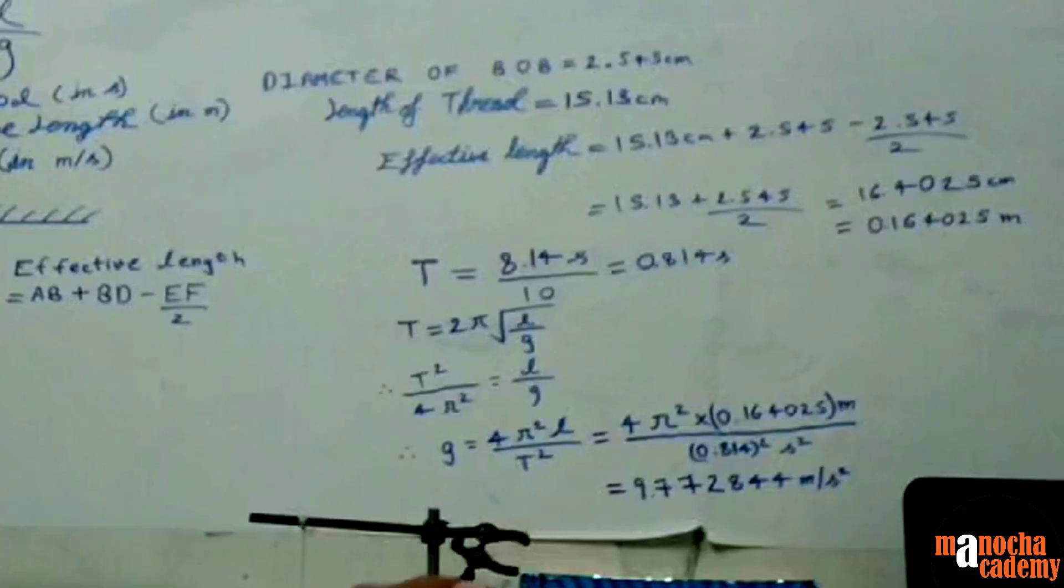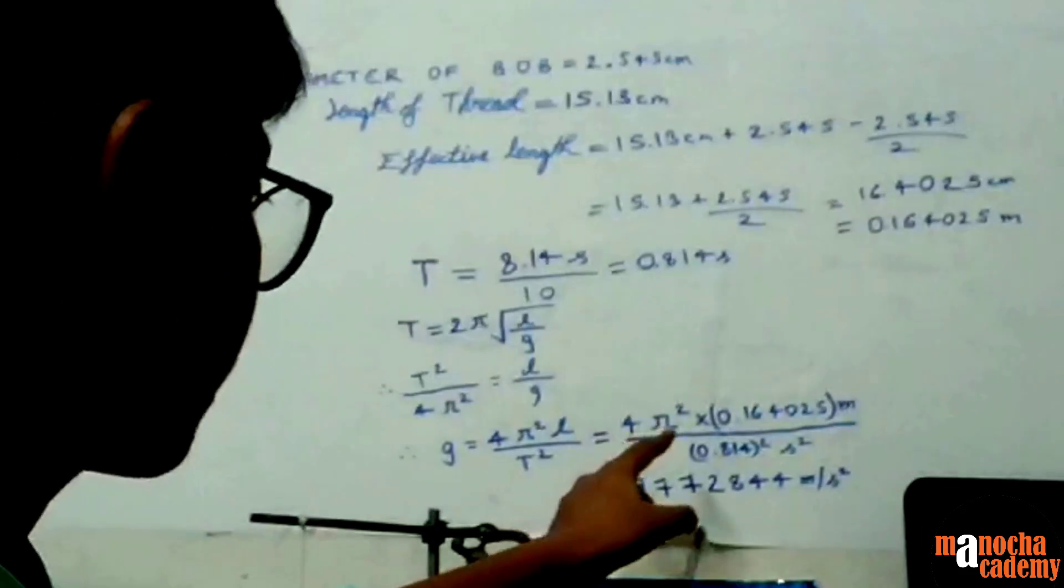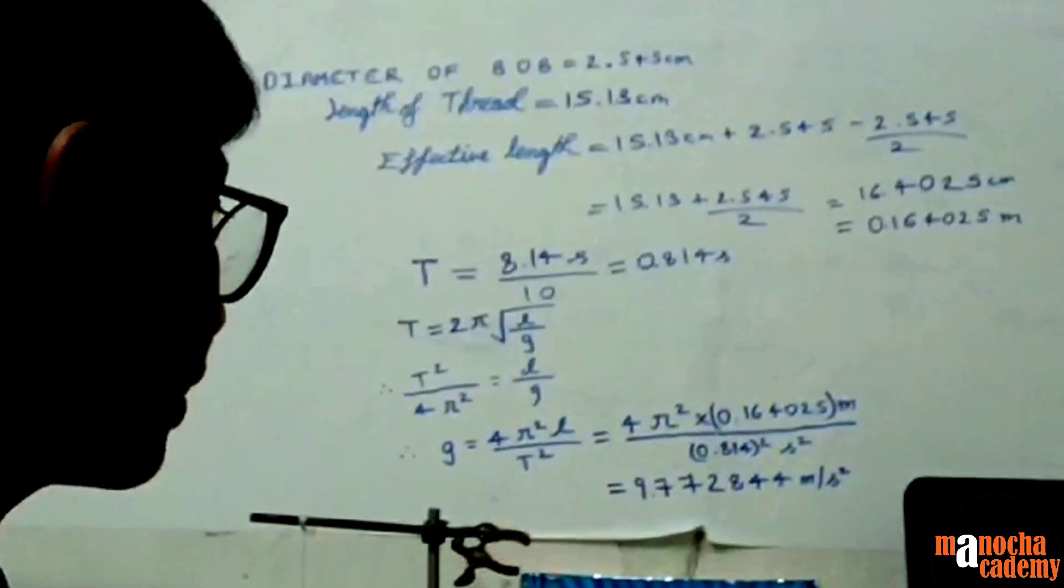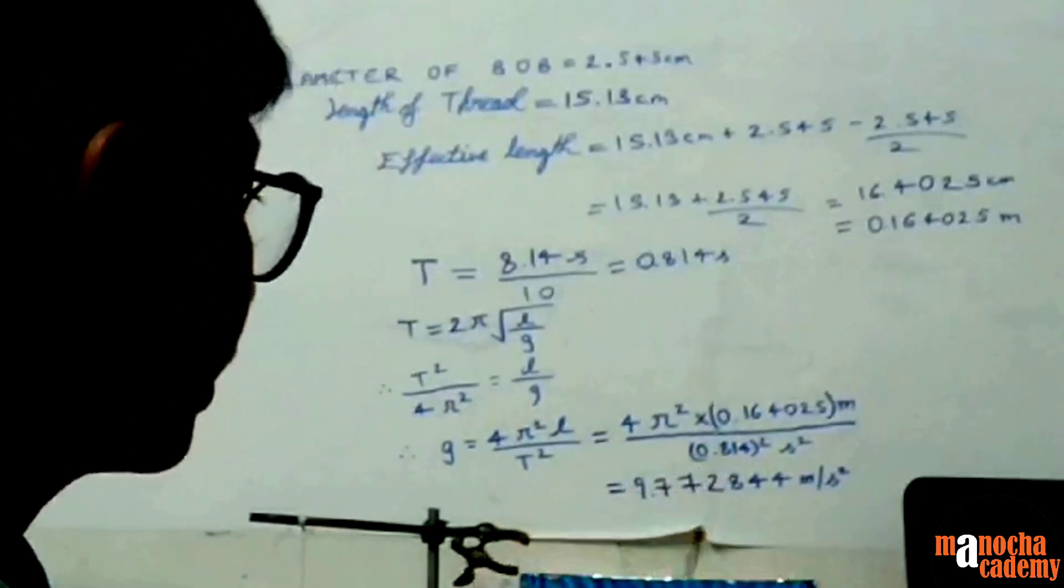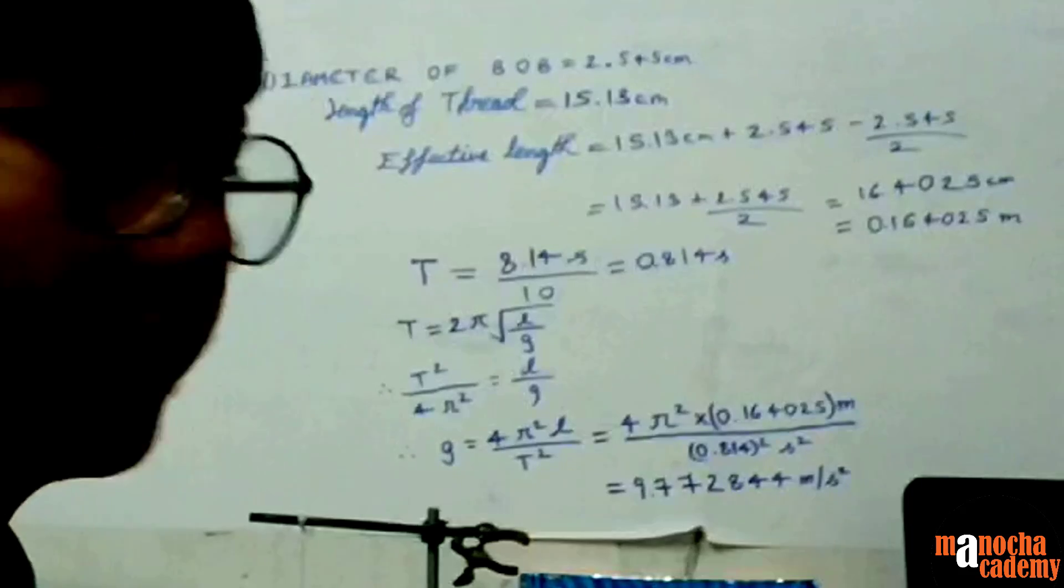Now we will substitute both the values. So 4π² × 0.164025 meter divided by 0.814² seconds².